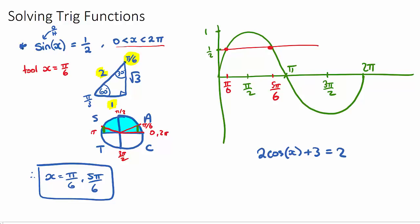but all they want you to do is try and rearrange this equation to get some trig ratio. So in this example, we would put the 3 over. So 2 cos of x would be, we'd subtract 3 from 2, it'd be negative 1. Cos of x would therefore be negative 1 half.